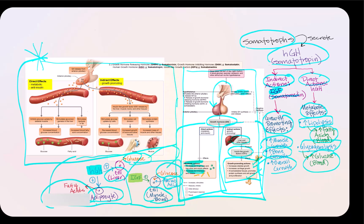Let's look at the negative feedback loop. Once human growth hormone reaches the necessary blood concentration, through negative feedback it will loop back and shut down production of growth hormone-releasing hormone, as well as shutting down human growth hormone production by the somatotropes. IGF will also do the same — once it reaches a certain concentration, it too will shut down human growth hormone production by the somatotropes.